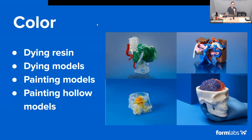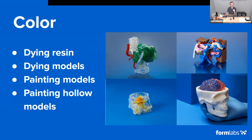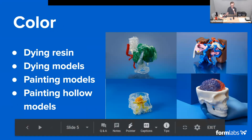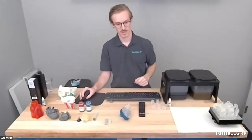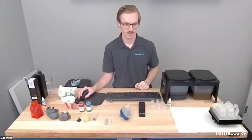Now we'll talk about coloring the models. We have four different methods to cover today: dyeing the resin, dyeing the printed models, painting models, and painting hollow models. All of these are pictured in the examples you see on the side.